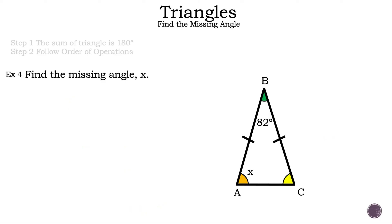Now let's take a look at example four. Let's read the question: find the missing angle X. Let's take a look at the triangle that they gave us. They gave us one measurement: 82 degrees. So can we find the missing angle X? Remember, we need to know two angles inside of a triangle to find the third. And in this case, we can, because this triangle is an isosceles triangle — two of the lines have hatch marks in the middle, which means those two lines have the same measurement. The two angles across from the hatch marks, the orange angle and the yellow angle, are the same. So the yellow angle is X, just as it is for the orange angle.